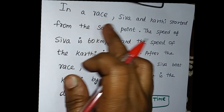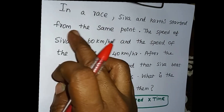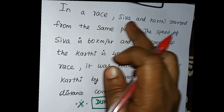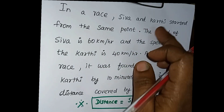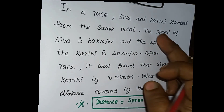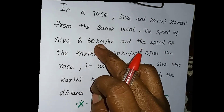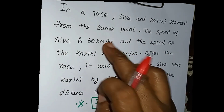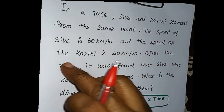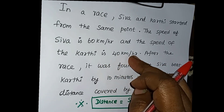In a race, Shiva and Karthi started from the same point. The speed of Shiva is 60 km per hour and the speed of Karthi is 40 km per hour.